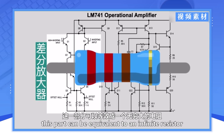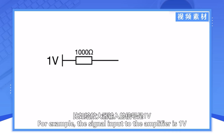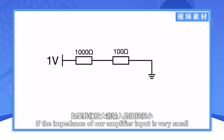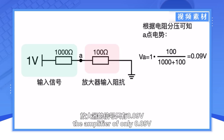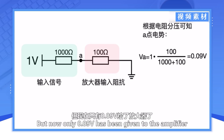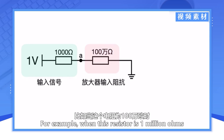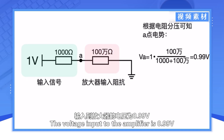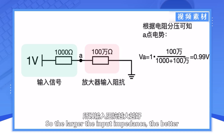This part can be equivalent to an infinite resistor. The advantage of this design is that it does not affect the input signal. For example, the signal input to the amplifier is 1V with impedance of 1000Ω. If the impedance of our amplifier input is very small, for example 100Ω, this will result in a signal input to the amplifier of only 0.09V. But our input signal is 1V — only 0.09V has been given to the amplifier. So it is necessary to ensure high input impedance. When this resistor is 1,000,000Ω, the voltage input to the amplifier is 0.99V, almost close to 1V.